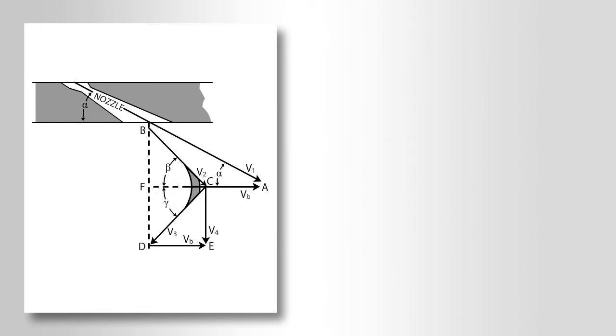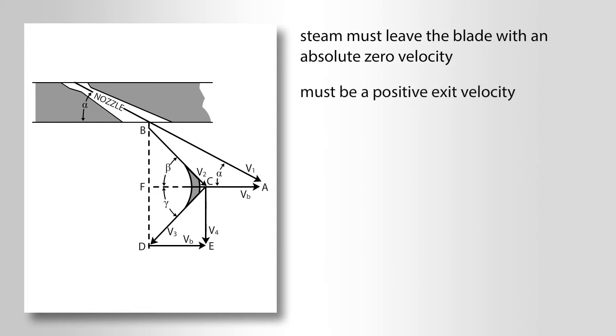It has been previously stated that in order to obtain maximum work from the steam jet striking a reversing blade, the steam must leave the blade with absolute zero velocity. This condition cannot be realized with anything less than a complete reversal of the steam flow, so in a real situation there must be a positive exit velocity, as represented by the vector V4 in the diagram.